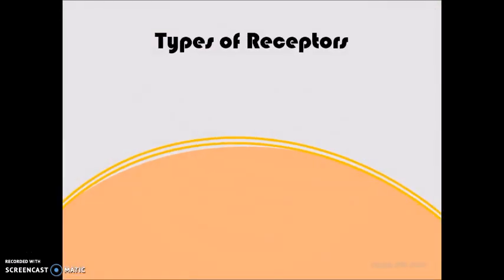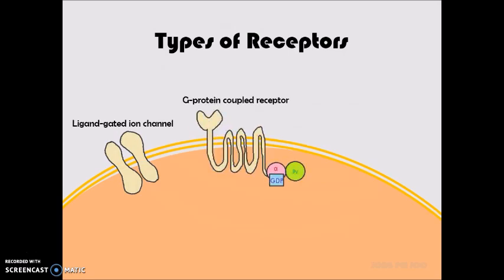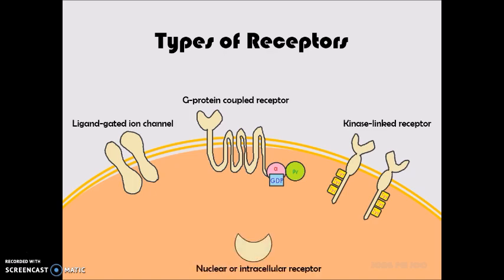The four categories of receptors for drug action on mammalian cells include ligand-gated ion channel, G-protein-coupled receptor, kinase-linked or enzyme-linked receptor, and nuclear or intracellular receptor.